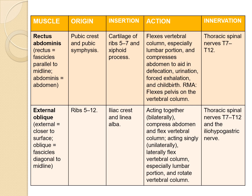The next muscle is external oblique. Origin: ribs 5 to 12. Insertion: iliac crest and linea alba. Actions: acting together bilaterally, the external oblique muscles compress the abdomen and flex the vertebral column; acting singly, they laterally flex the vertebral column, especially the lumbar portion, and rotate the vertebral column. Innervation: thoracic spinal nerves T7 to T12 and the iliohypogastric nerve.